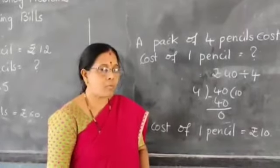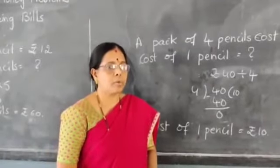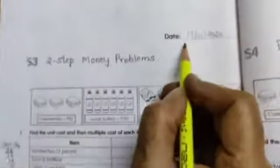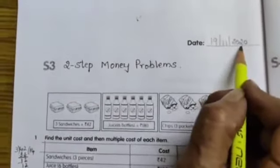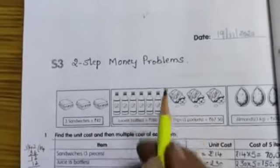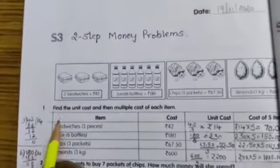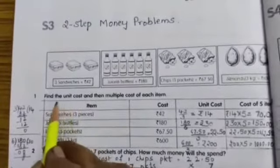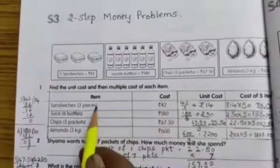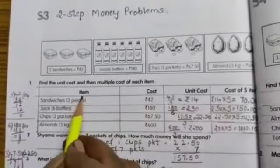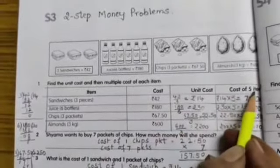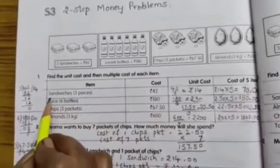Now we will solve workbook problems children. Open your workbook, page number 32. Date 19-11-2020. S3: 2-step money problems. Find the unit cost and then the total cost of each item. The table has columns: item cost, unit cost, and cost of 5 items.